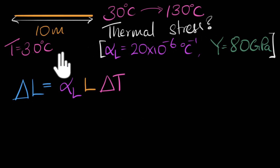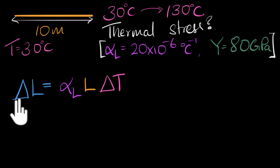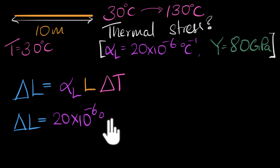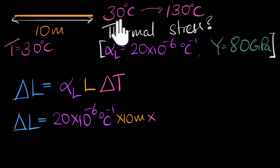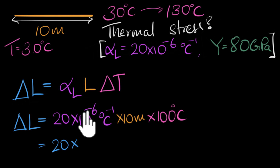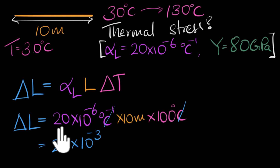We can just plug in these numbers. We know alpha_L, we know L, and we know delta_T — the change in temperature is 130 minus 30, which is 100 degrees Celsius. So delta_L = 20×10⁻⁶ °C⁻¹ × 10 m × 100 °C. That gives 20×10⁻³ meters, which is about 20 millimeters. So at 130 degrees Celsius, the wire would be 20 millimeters longer if it were free to expand.